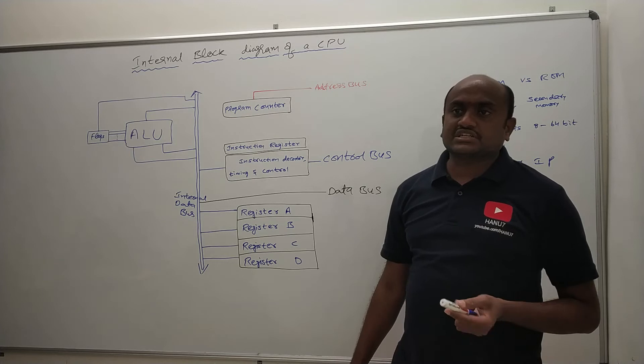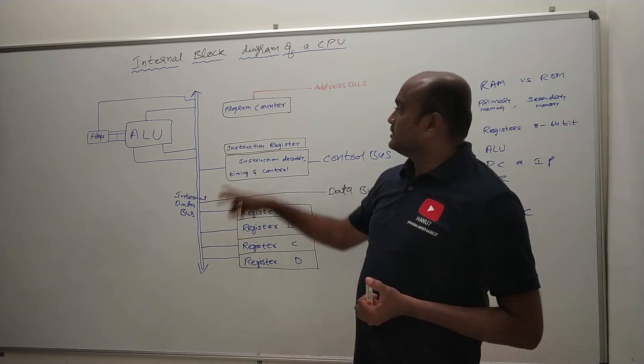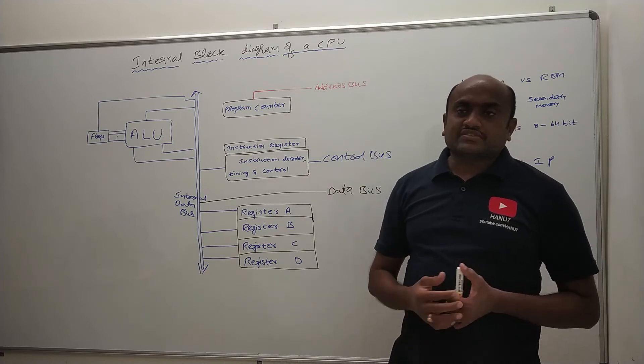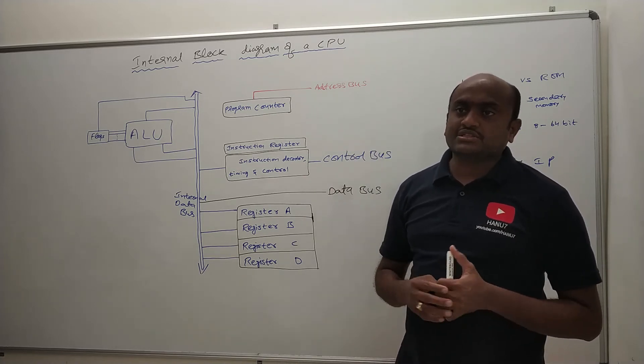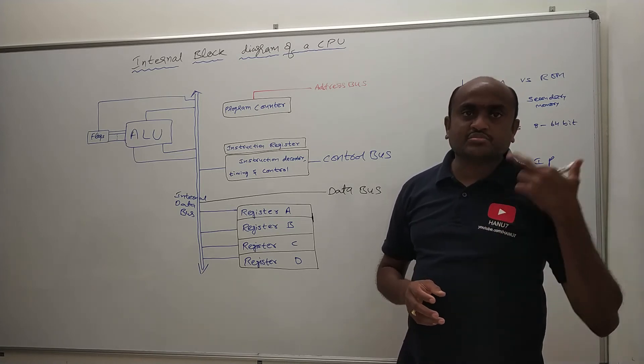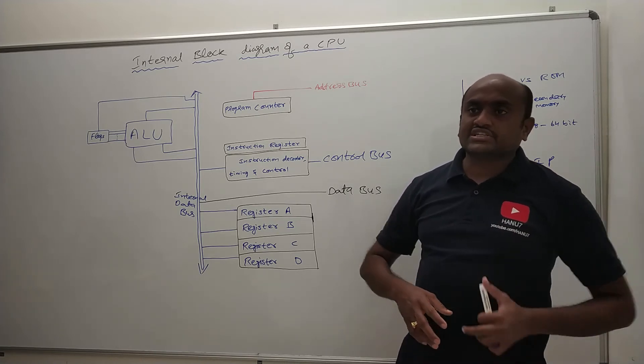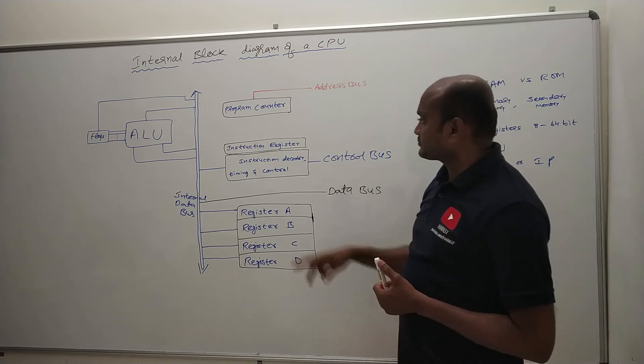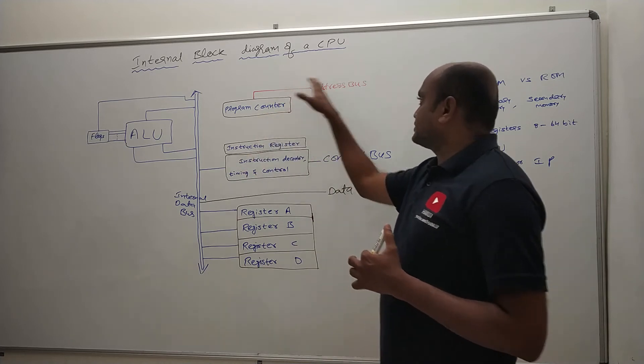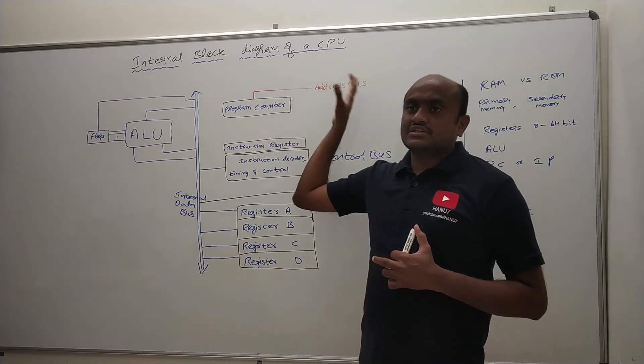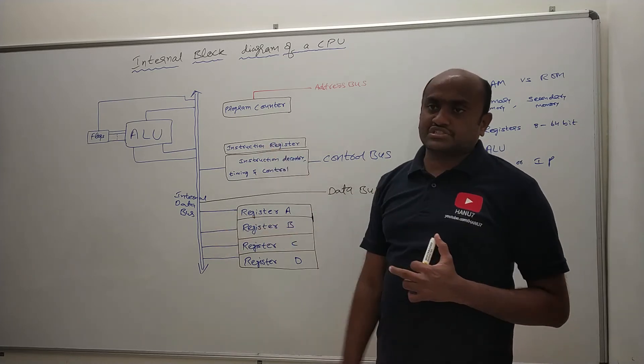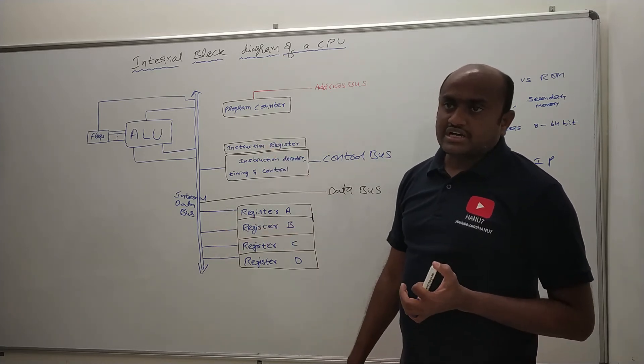So that is the job of program counter. It will point to the address of next instruction. In certain CPUs we can say that there is instruction pointer instead of program counter. The name instruction pointer and program counter both are same. Instruction pointer, it is pointing to the address of next instruction. Then we have instruction register. Whatever the address your address bus will hold, from that particular address data will come and sit into the instruction register. IR is such a register.